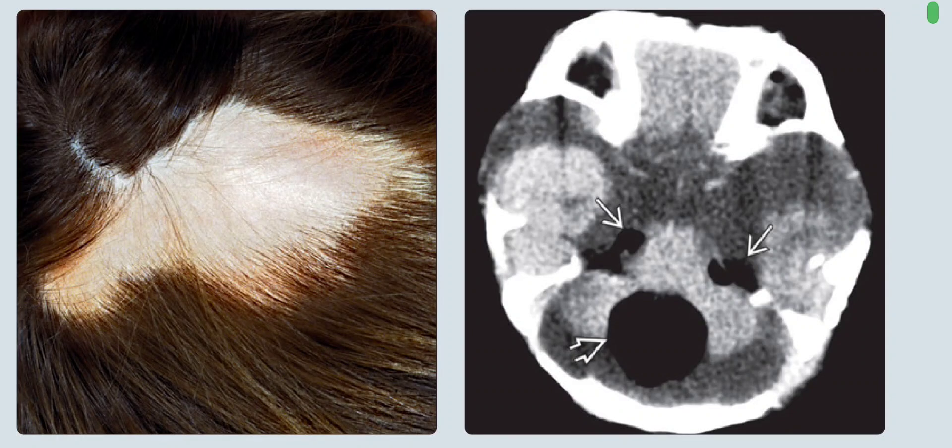Starting with the encephalocraniocutaneous lipomatosis cases. On the left is the clinical photograph of a scalp, showing the typical appearance of the nevus psiloliparis — a well-circumscribed area of scalp alopecia.